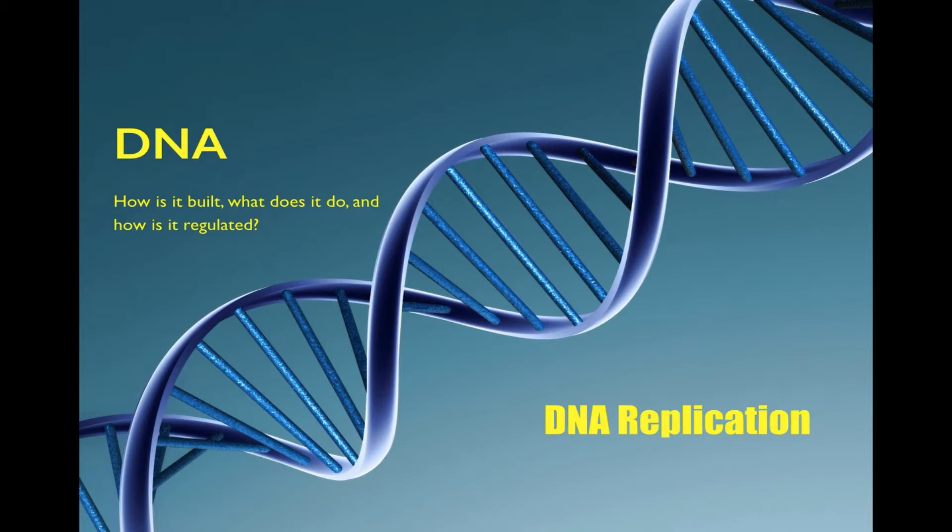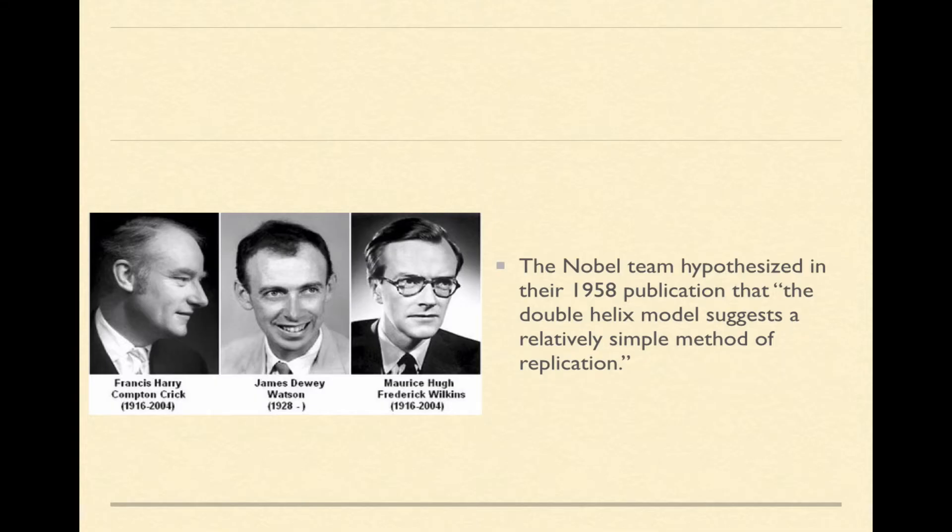In this segment, we're going to look at DNA replication, which is the process by which a DNA molecule makes a perfect copy of itself using a team of enzymes. Now the Nobel team that hypothesized in their 1958 publication hypothesized that the double helix model suggests a relatively simple method of replication. So they knew that based on the double helix structure, DNA must be able to in a way unzip itself and then make two new copies from the unzipped original strands.